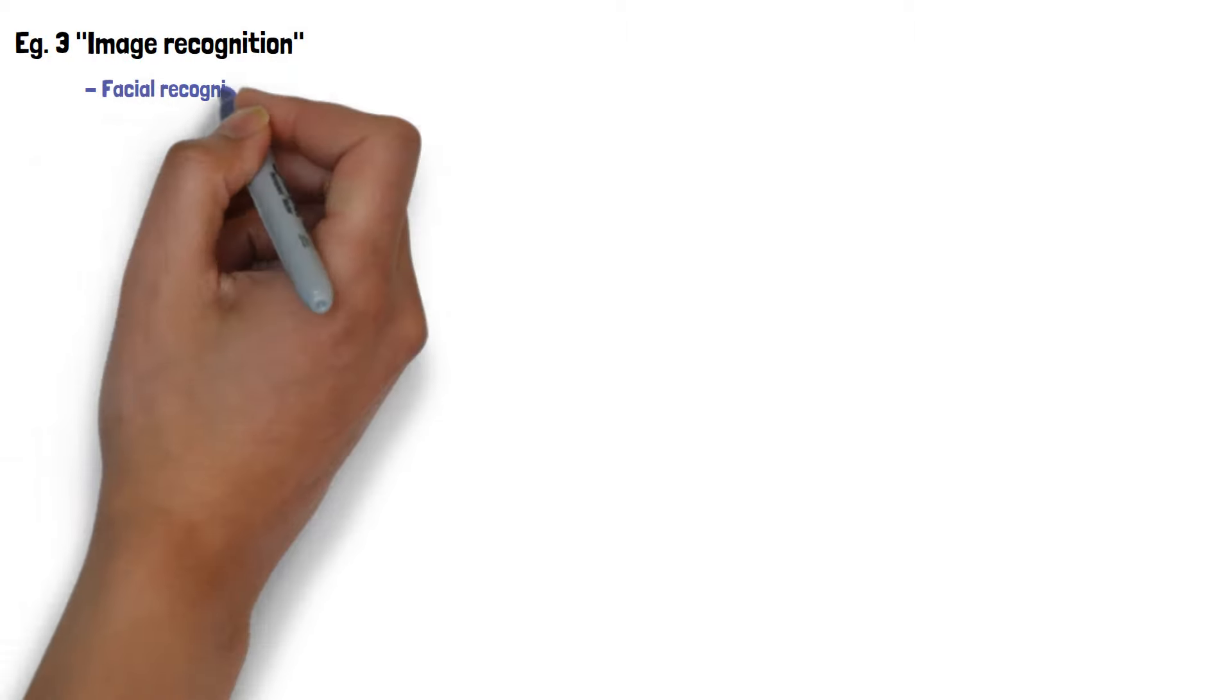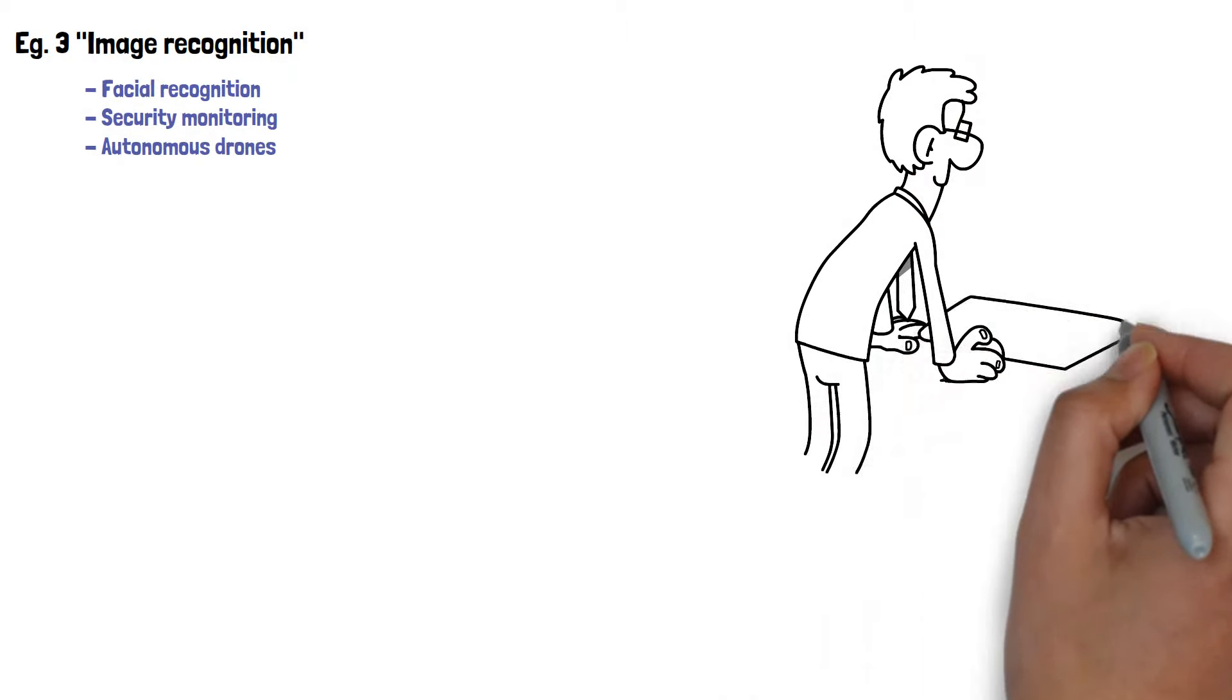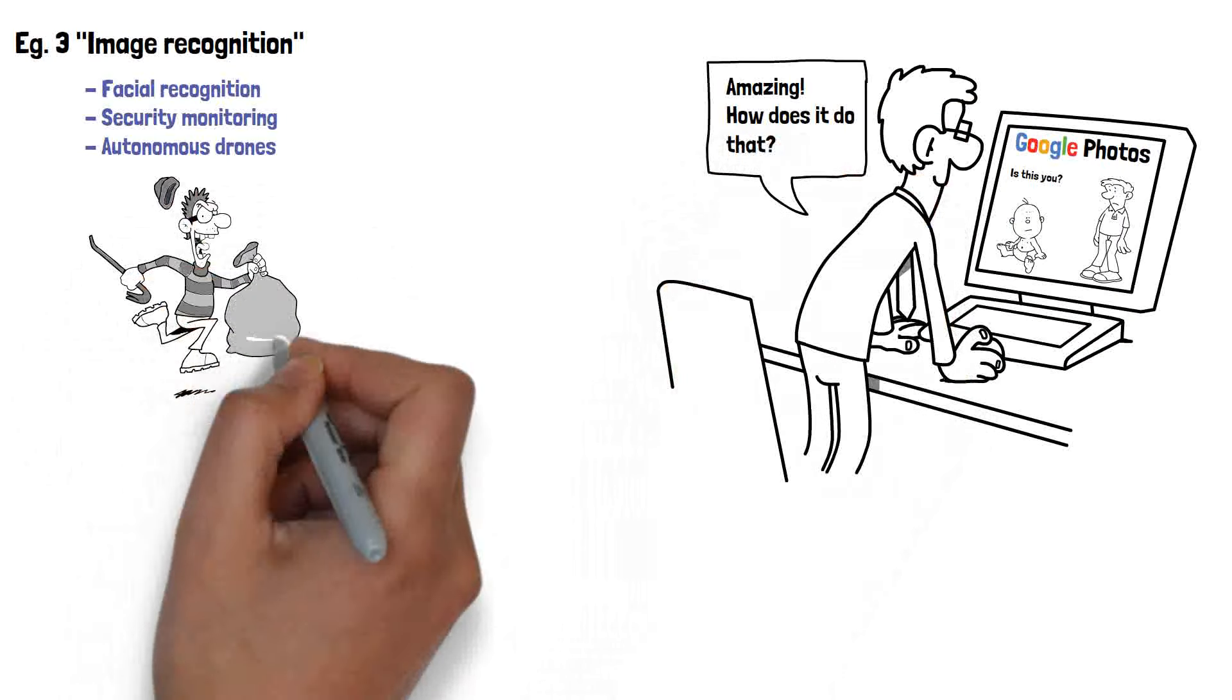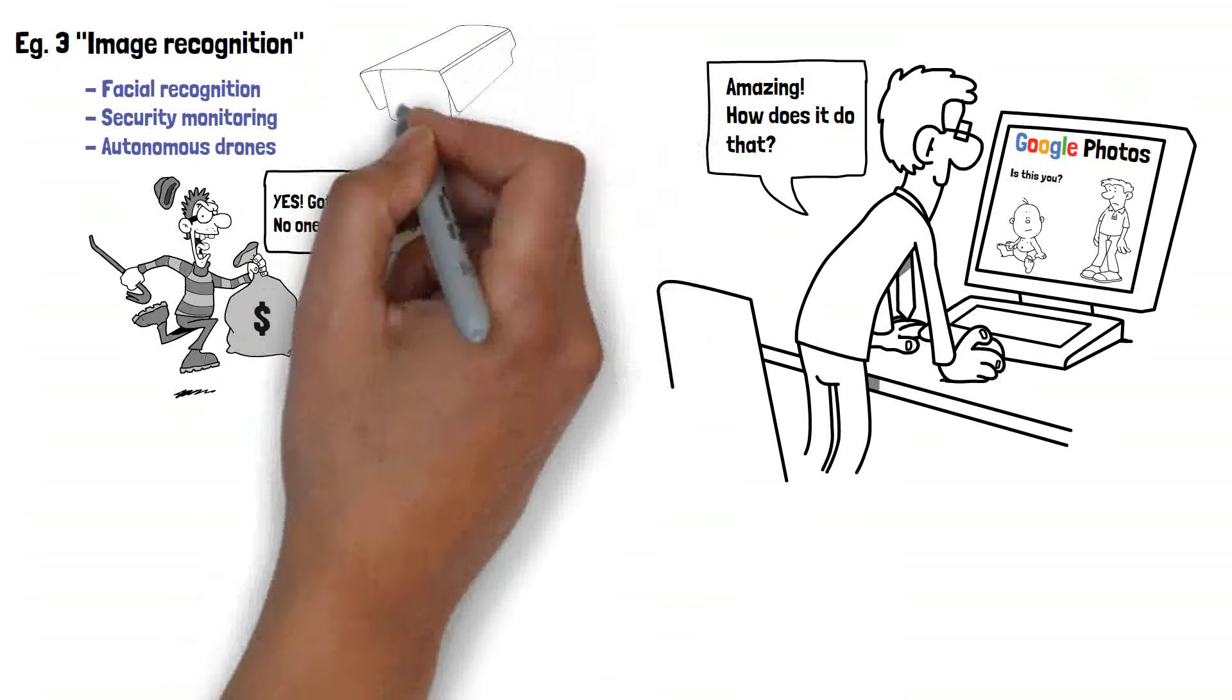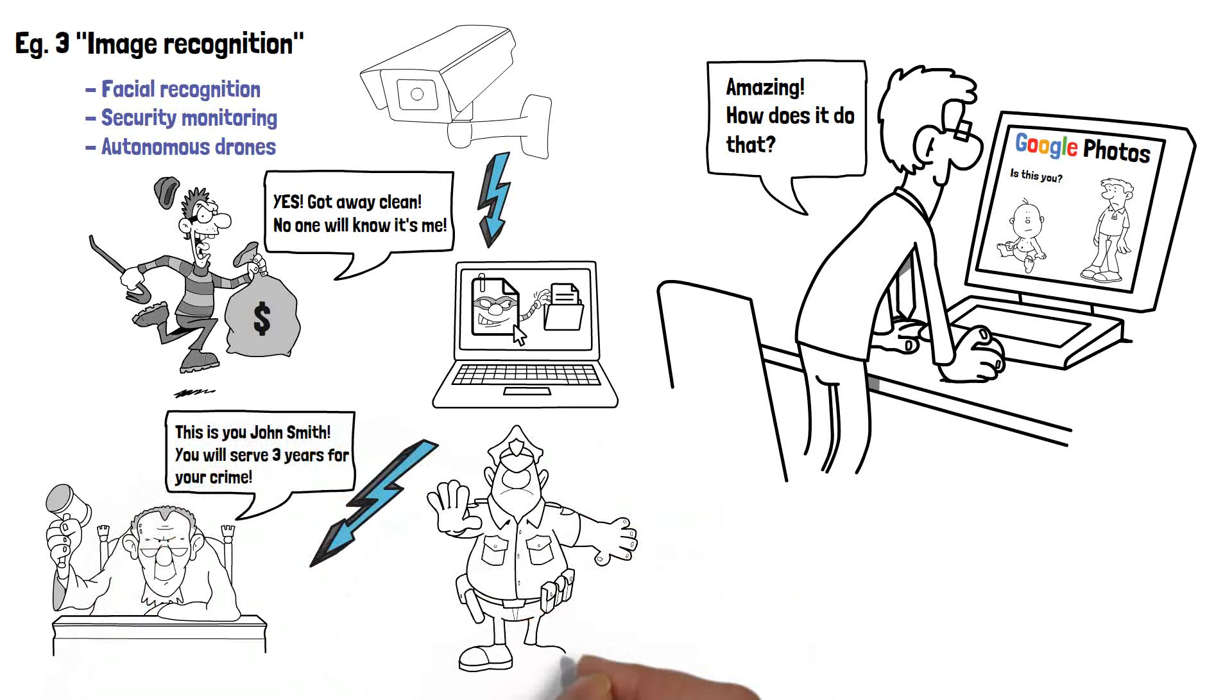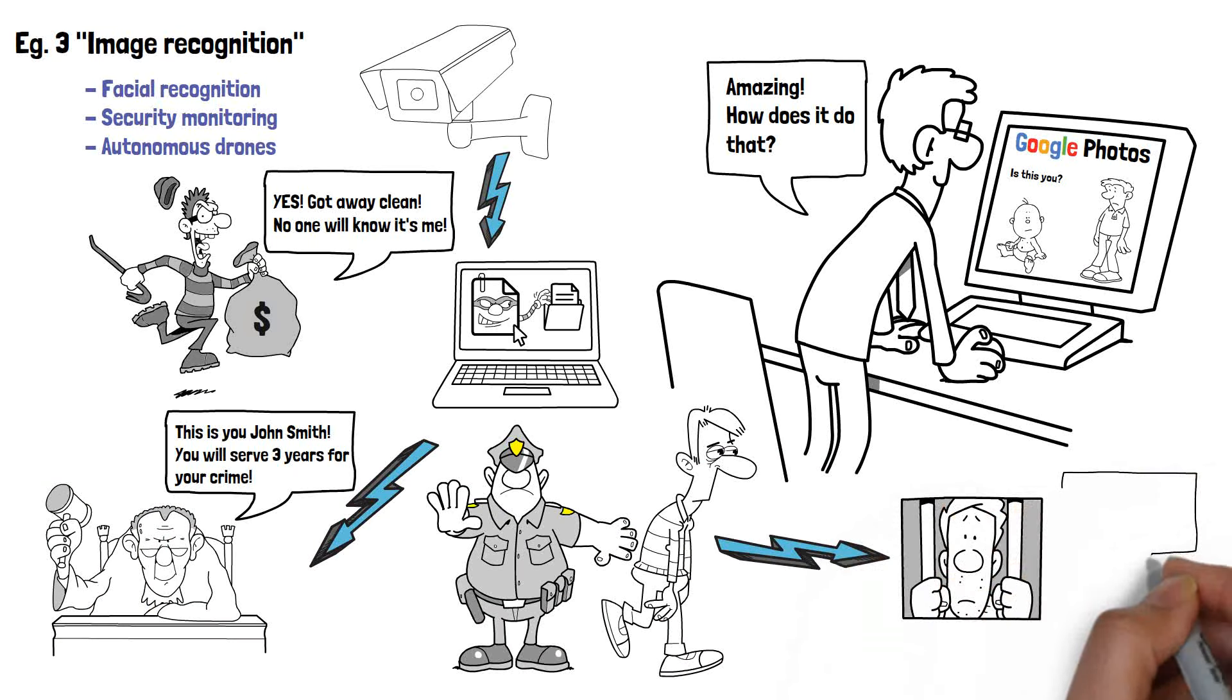Another example is image recognition. These AI systems can recognize and categorize objects, people, and scenes in an image and video, enabling applications such as facial recognition, security monitoring, and autonomous drones.